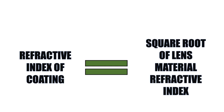Single-layer coatings are not as effective as multi-layer coatings because different wavelengths of light need different coating thicknesses. That's why multi-layered coatings help solve the problem of single-layer coatings.